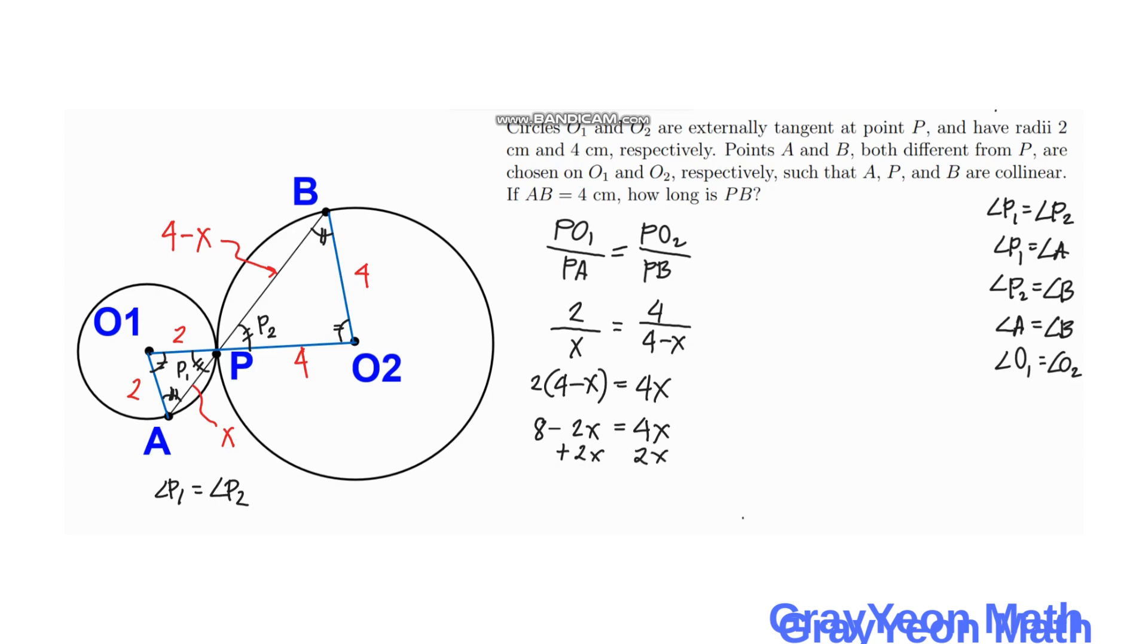So simplifying the left side we have 8 minus 2X equal to 4X. If we add 2X here, we add 2X here, and we have 8 is equal to 6X. So X is equal to 8 over 6, divisible by 2, so we have 4 over 3. X is equal to 4 over 3 cm.